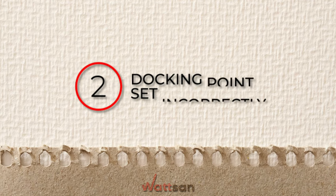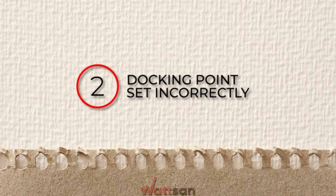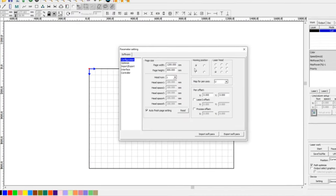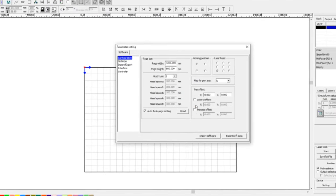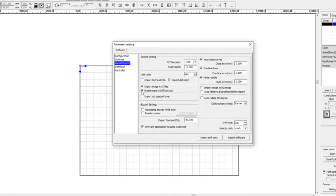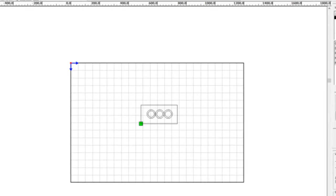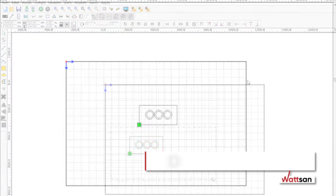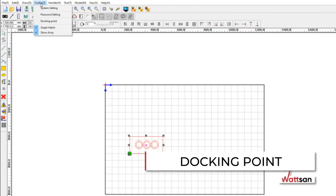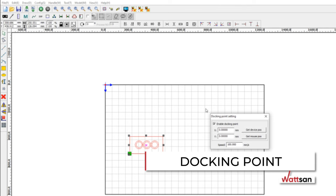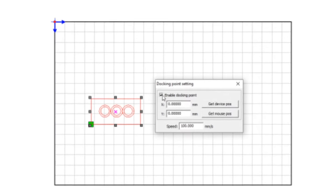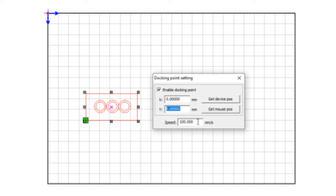2. Docking point set incorrectly. Sometimes owners of CO2 laser machines click all the checkboxes without reading the instructions and not understanding how the program works. The Watson CO2 laser machines have a special function called Docking Point. This is the position to which the machine moves after the layout is finished. This is convenient for changing the material after the current job is completed.